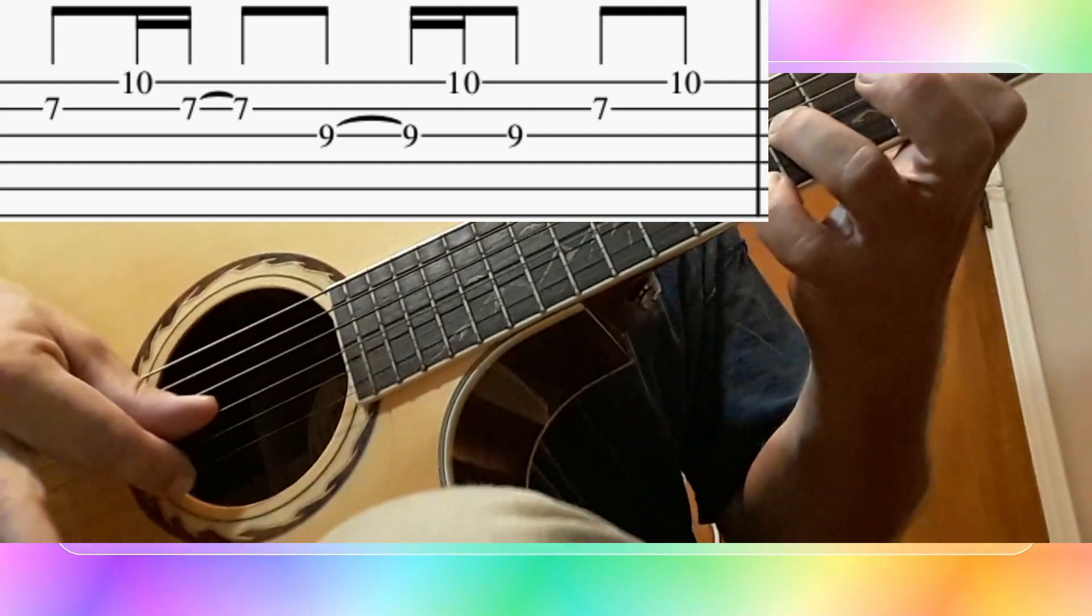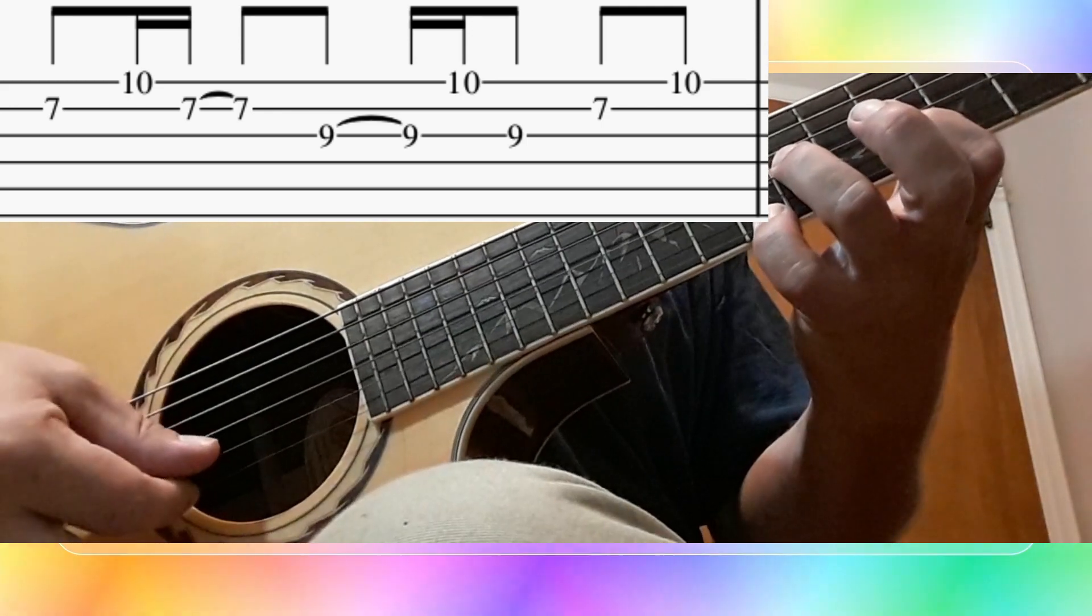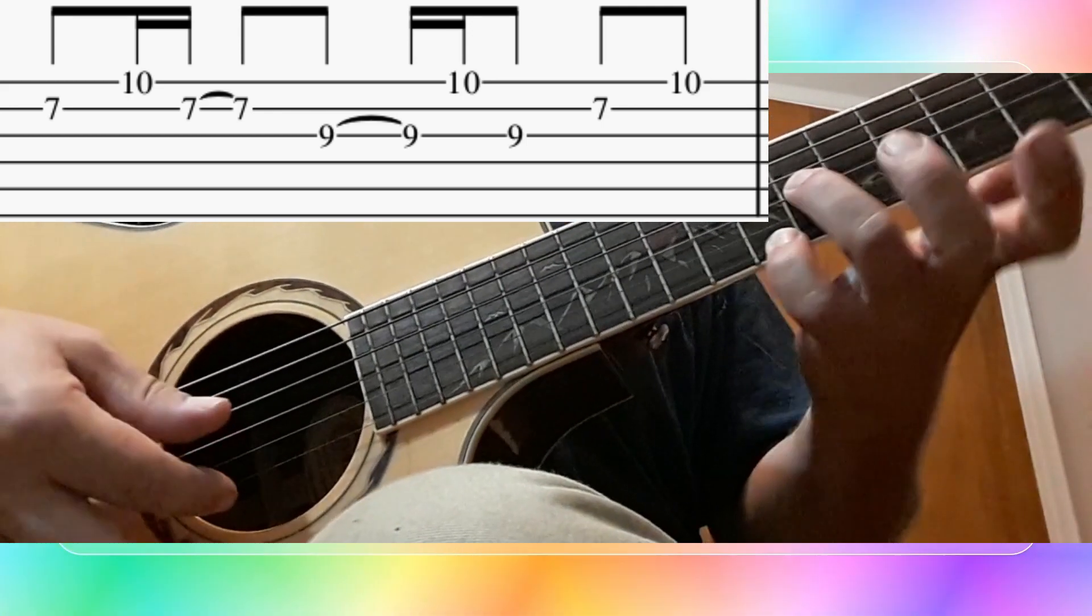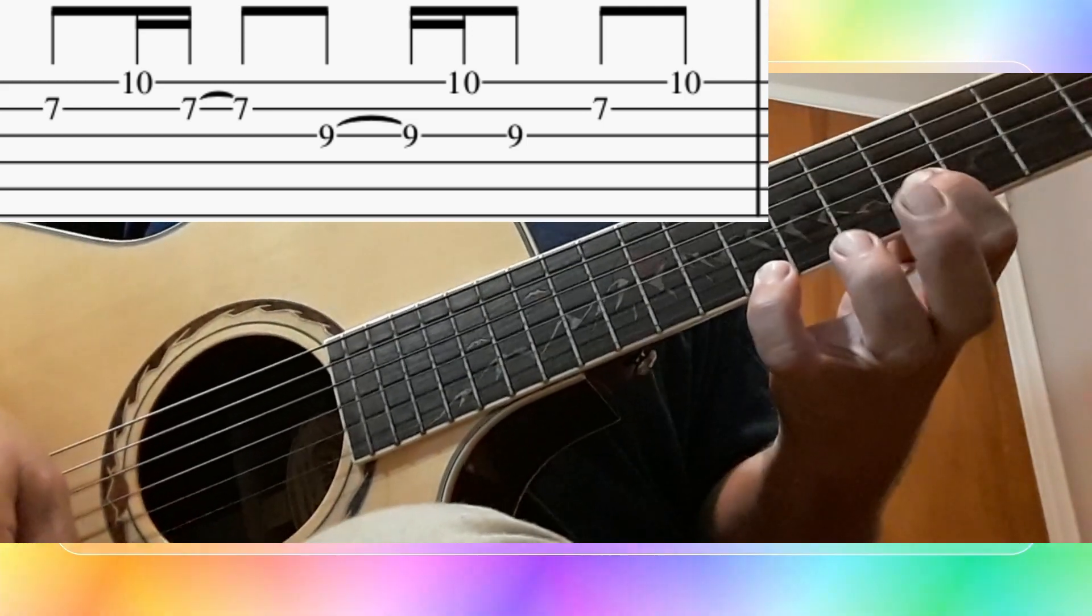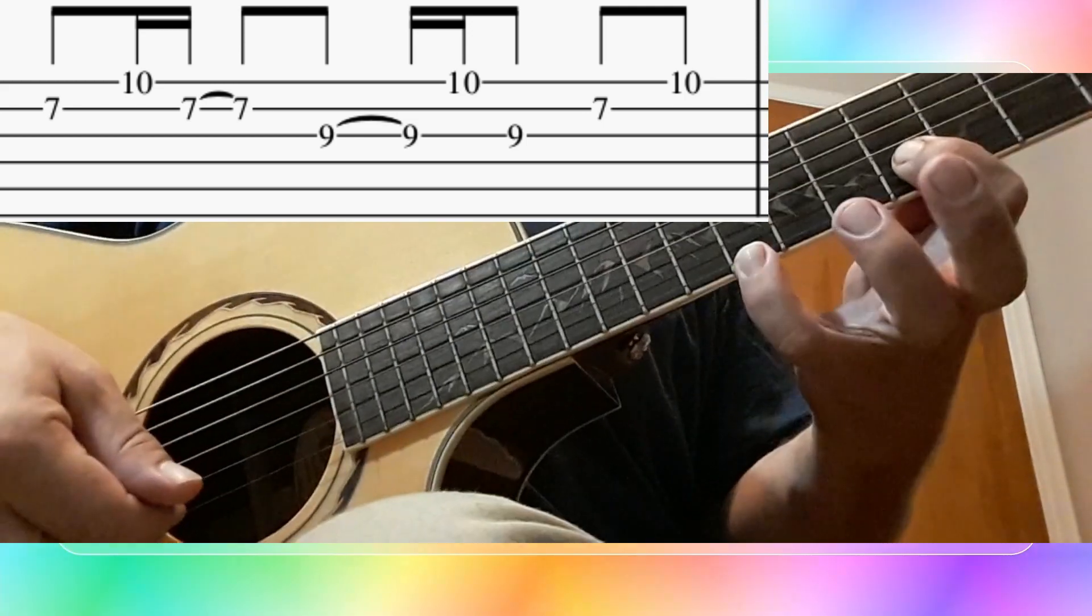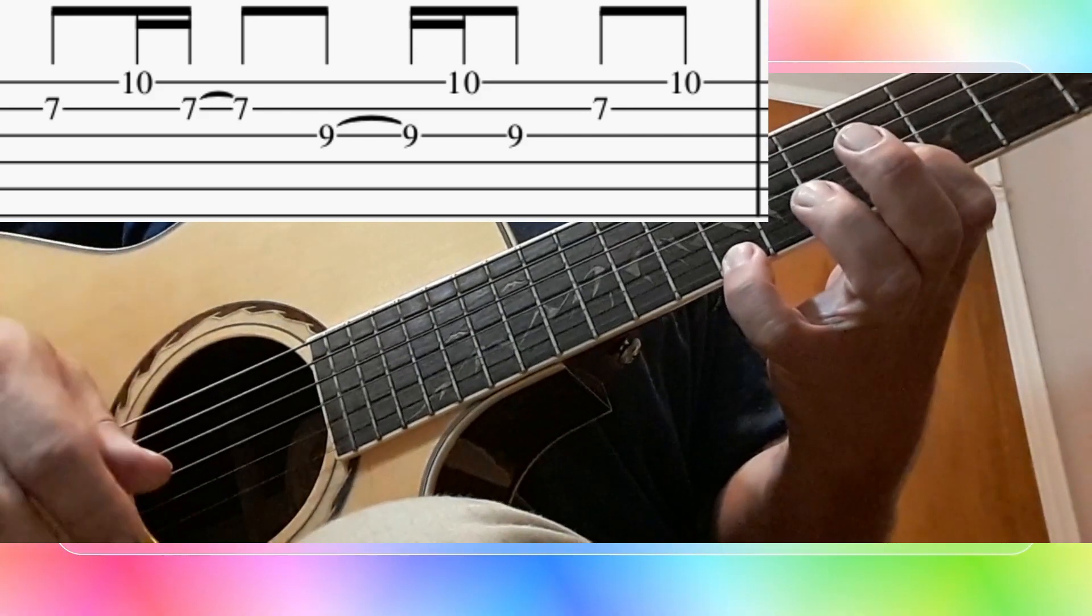Now play the 3rd string again. That was the 3rd finger at fret 9 on the 3rd string. Now the 1st finger on string 2 at fret 7. And then the 4th finger here in your fingerboard hand is on the 10.